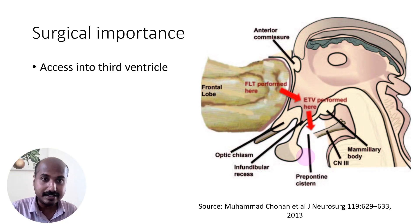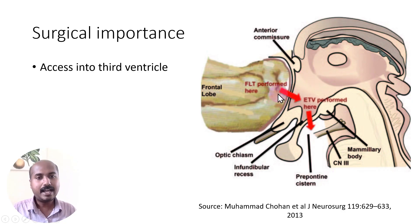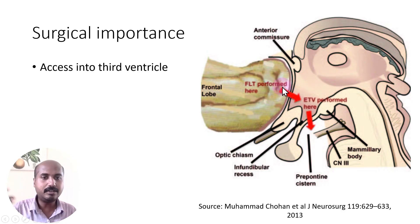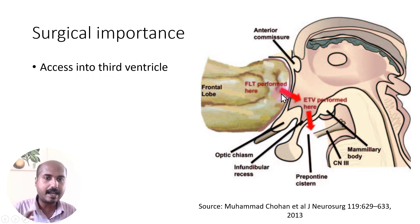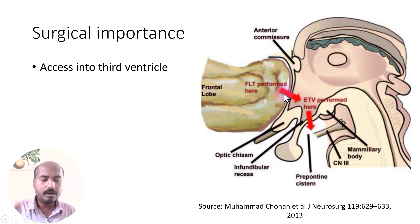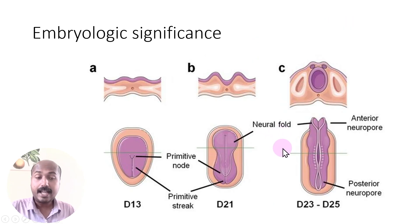Now let us look at the significance of the lamina terminalis. First, its surgical significance: in front is the cistern of the lamina terminalis, and behind is the third ventricle. A perforation — called fenestration of the lamina terminalis — can be performed to access the third ventricle. This surgical approach is also used in surgeries involving the anterior cerebral artery, which is found in the cistern of the lamina terminalis.